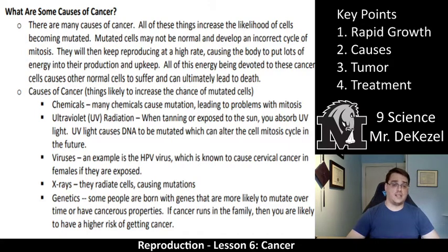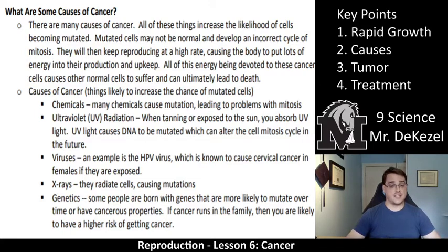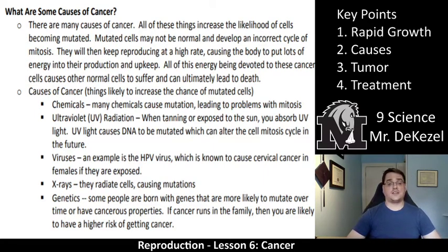Ultraviolet light from the sun can cause mutations and you can get skin cancer. Viruses are another cause — an example is the HPV virus, which is known to cause cervical cancer. If you get this virus, it causes mutations in the lining of your cervix, and those cells reproduce quickly, so it's very common to get cancer with HPV. We now have vaccines against that to protect people. X-rays can also cause cancer because they are radiation.